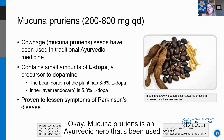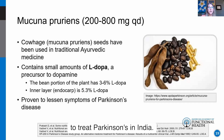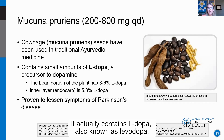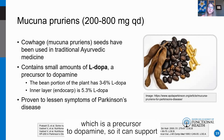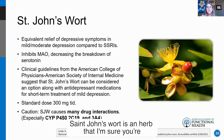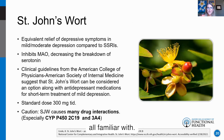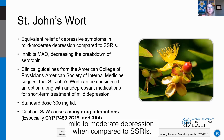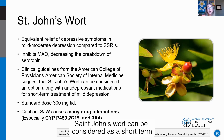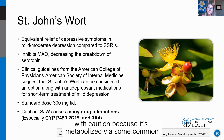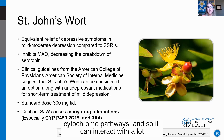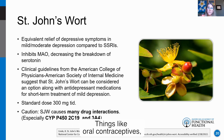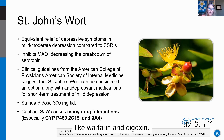Mucuna pruriens is an Ayurvedic herb used to treat Parkinson's in India. It actually contains L-DOPA (levodopa), a precursor to dopamine, so it can support low catecholamine levels. St. John's Wort has been shown in studies to provide equivalent relief of mild to moderate depression when compared to SSRIs. It can be considered a short-term treatment option for mild depression, but use it with caution because it's metabolized via common cytochrome pathways and can interact with oral contraceptives, warfarin, and digoxin.